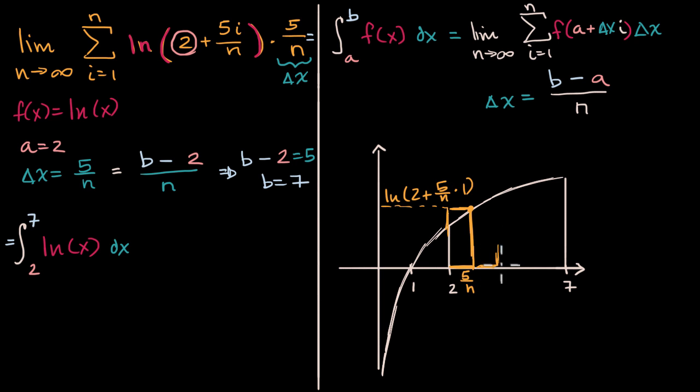This one right over here, the width is the same, five over n, but what's the height? Well, the height here, this height right over here is going to be the natural log of two plus five over n, times two, times two. This is for i is equal to two. This is i is equal to one. And so hopefully you are seeing that this makes sense. The area of this first rectangle is going to be natural log of two plus five over n, times one, times five over n. The second one over here, natural log of two plus five over n, times two, times five over n. And so this is calculating the sum of the areas of these rectangles. But then it's taking the limit as n approaches infinity. So we get better and better approximations going all the way to the exact area.